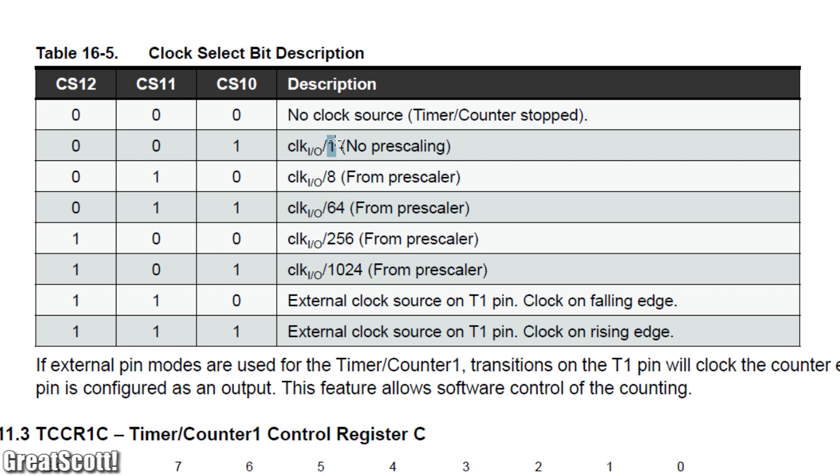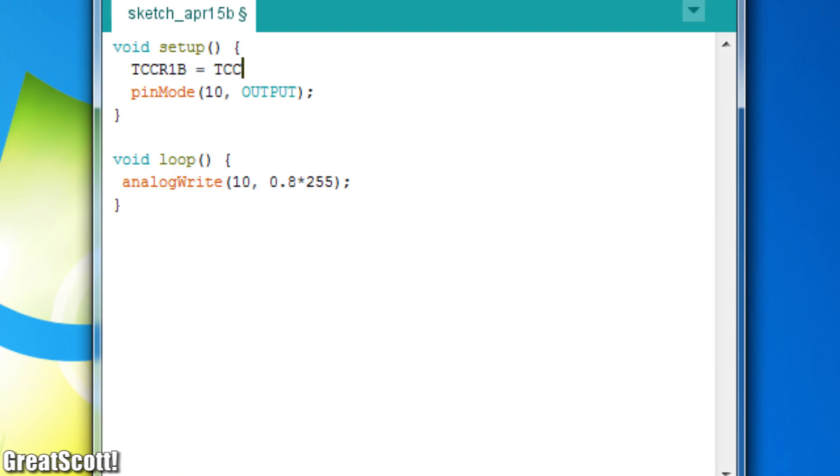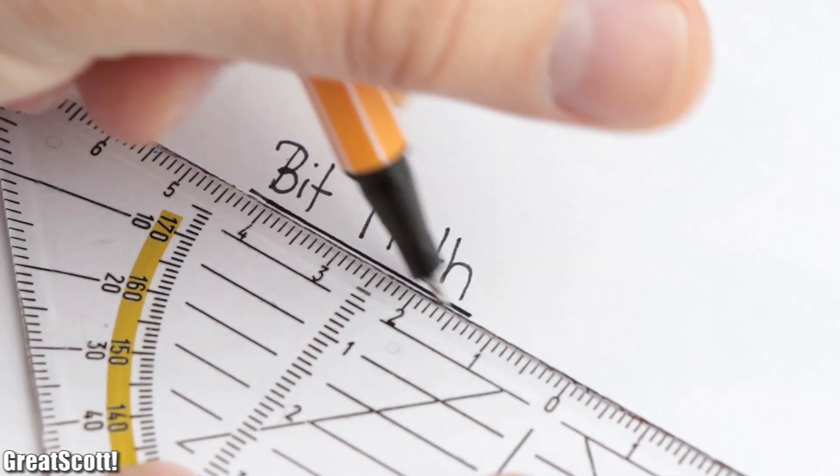So let's try to select a prescaler of 1 to increase the frequency. The utilized command line might look complicated at first, but it is quite easy to understand once you know how bit math works.